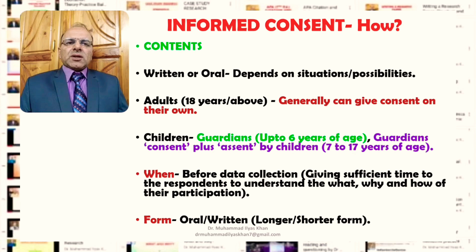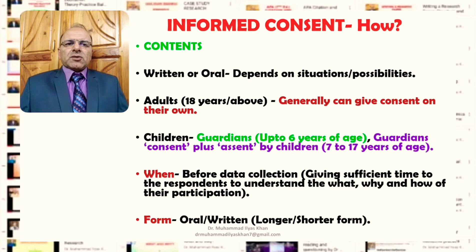Generally, adults — that is, 18 years of age or above — can give their own consent. For children, guardians can give consent on their behalf. For children up to the age of six years, it is generally essential for guardians such as parents, teachers, or other guardians to give consent. For children from age seven to seventeen, it is important that guardians give their consent, plus that consent is then assented to or agreed to by the children as well.